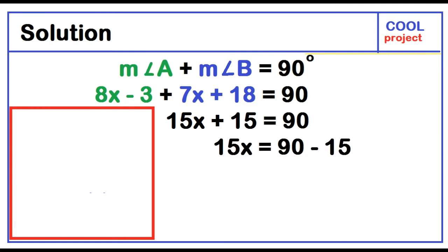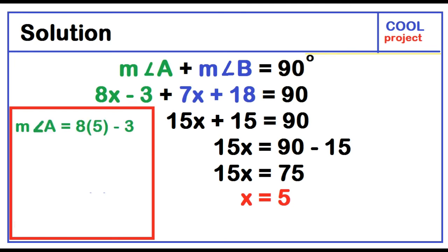Subtract 15 from both sides. 15x equals 90 minus 15. 15x equals 75. Dividing both sides by 15, x equals 5. Substitute 5 for x. The measure of angle A equals 8 times 5 minus 3, which is equal to 40 minus 3. The measure of angle A is equal to 37 degrees.